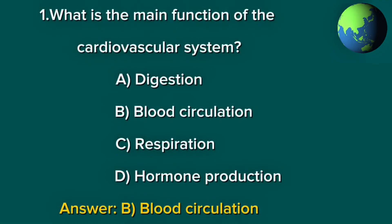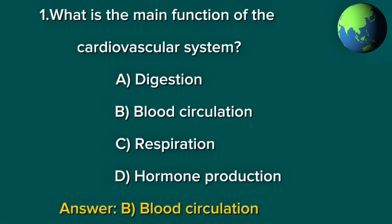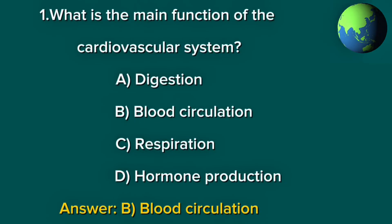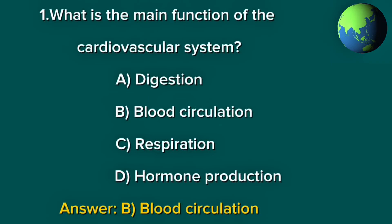Question 1. What is the main function of the cardiovascular system? A. Digestion. B. Blood circulation. C. Respiration. D. Hormone production. Answer: B. Blood circulation.